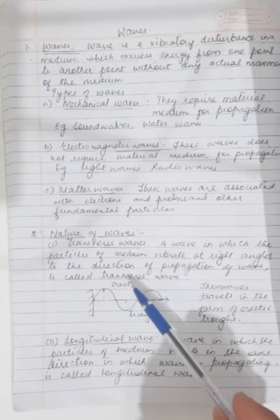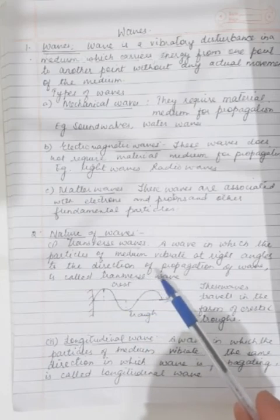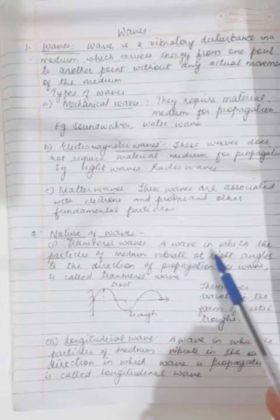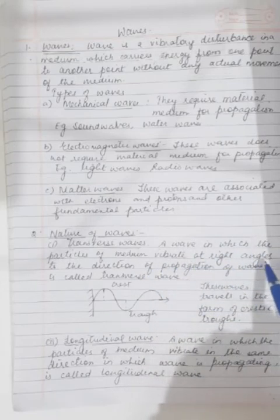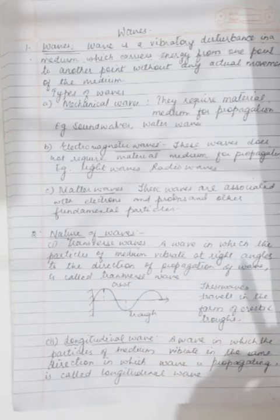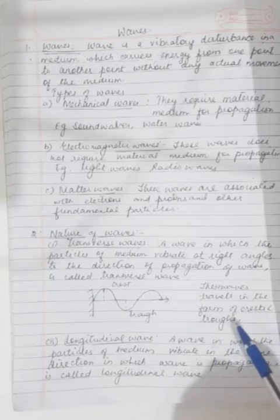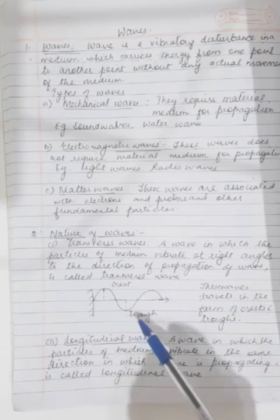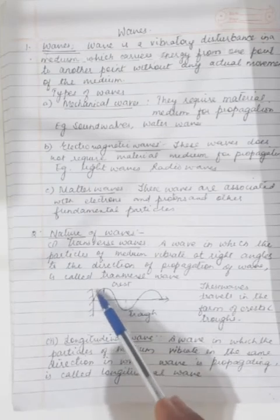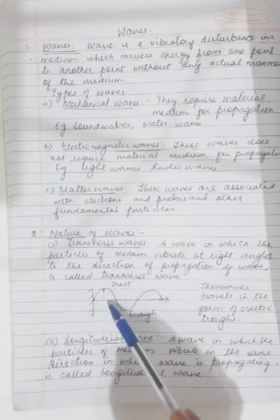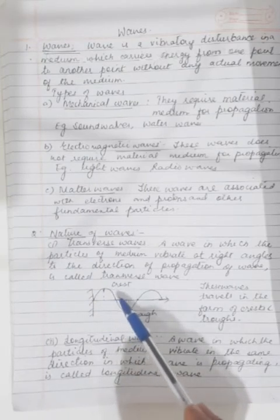The next topic is the nature of waves. We classify the nature of waves as transverse waves and longitudinal waves. A transverse wave is one in which the particles of the medium vibrate at right angles to the direction of propagation of the wave. These waves travel in the form of crests and troughs — you can see here the direction of propagation, and the particles move up and down forming crests and troughs.